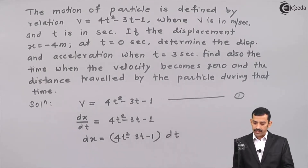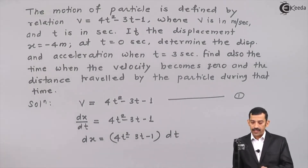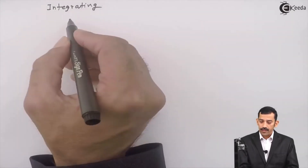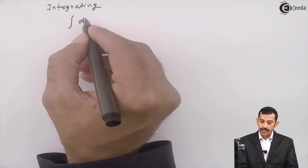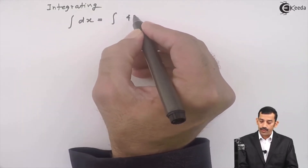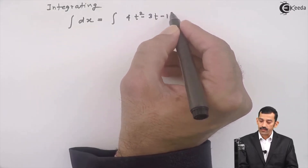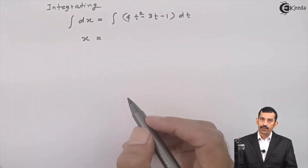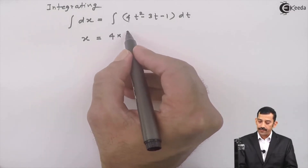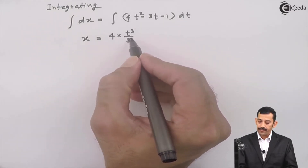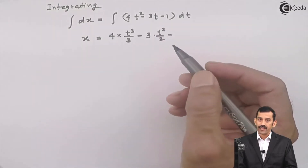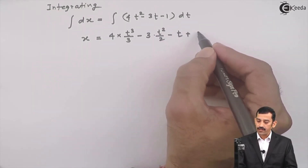If we integrate this equation, we will get the relation between position x and time t. Integrating both sides, the integral of dx equals the integral of 4t squared minus 3t minus 1 dt. The integral of 4t squared gives 4t cubed over 3, the integral of minus 3t gives minus 3t squared over 2, the integral of minus 1 gives minus t, plus a constant of integration c1.